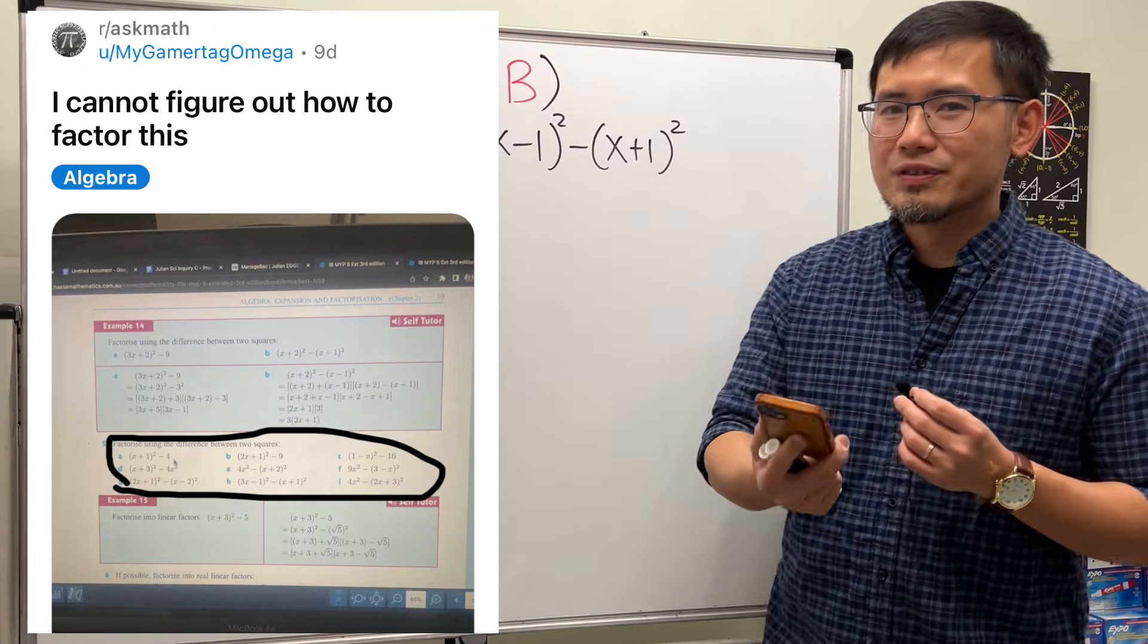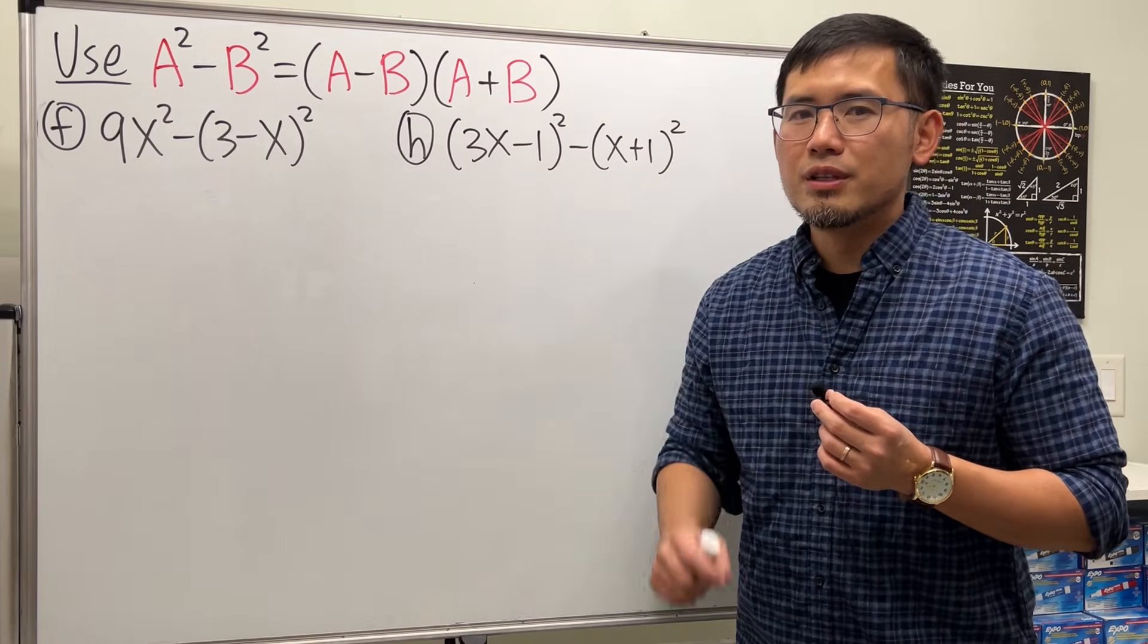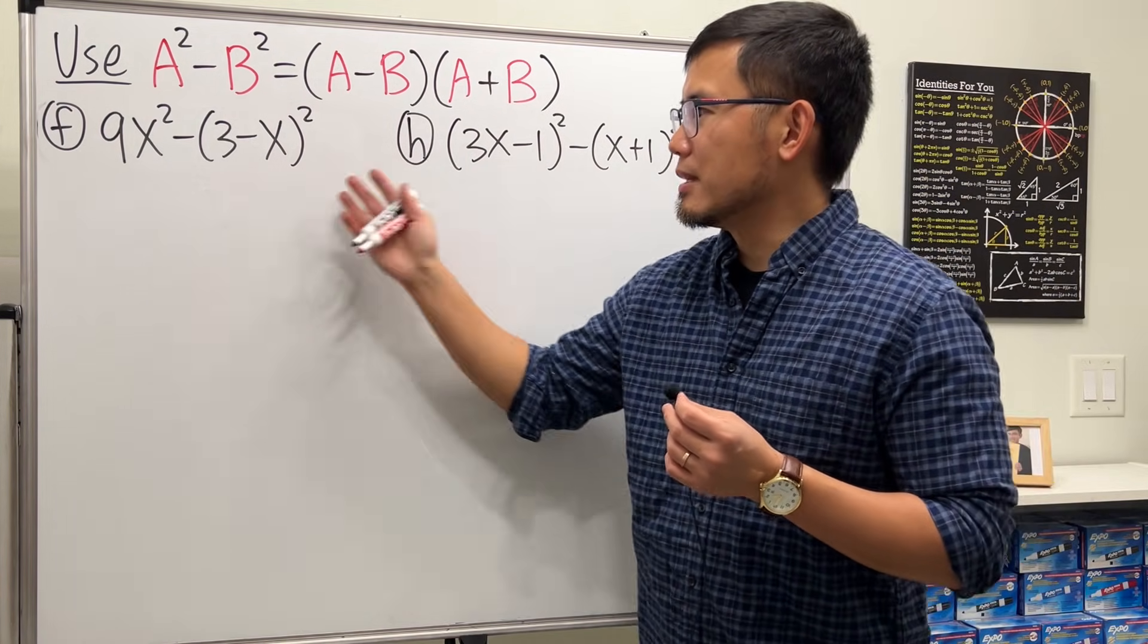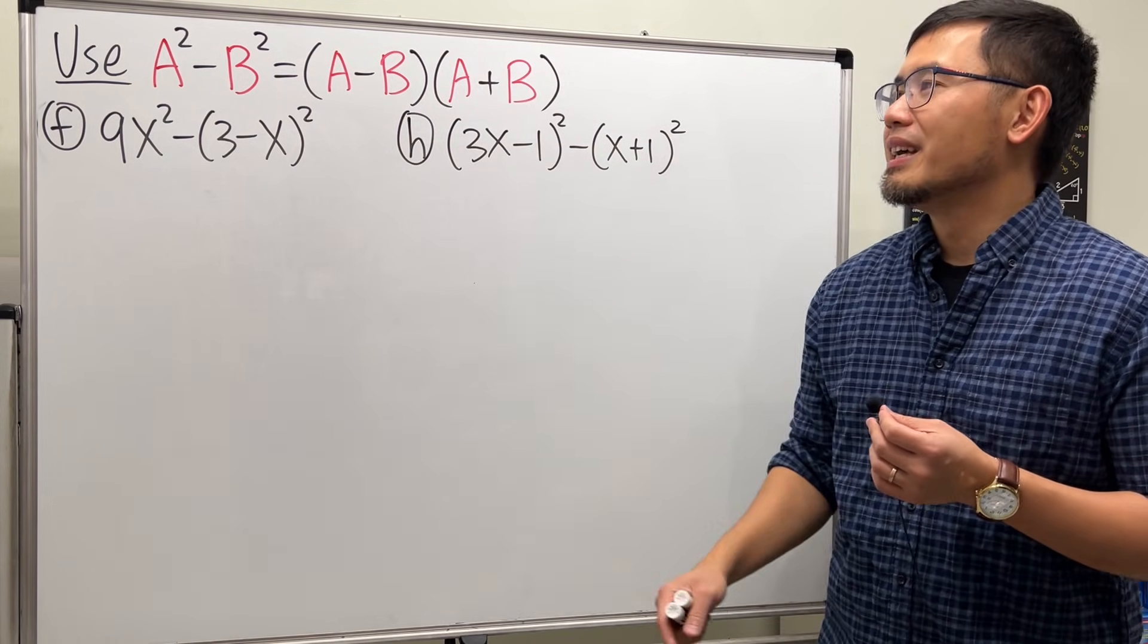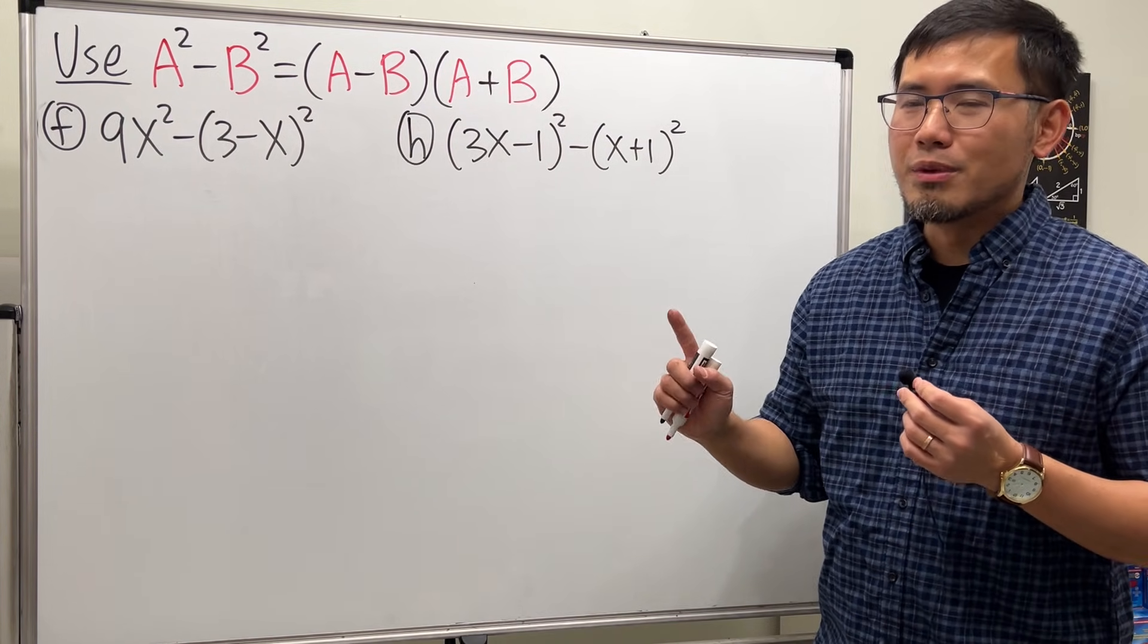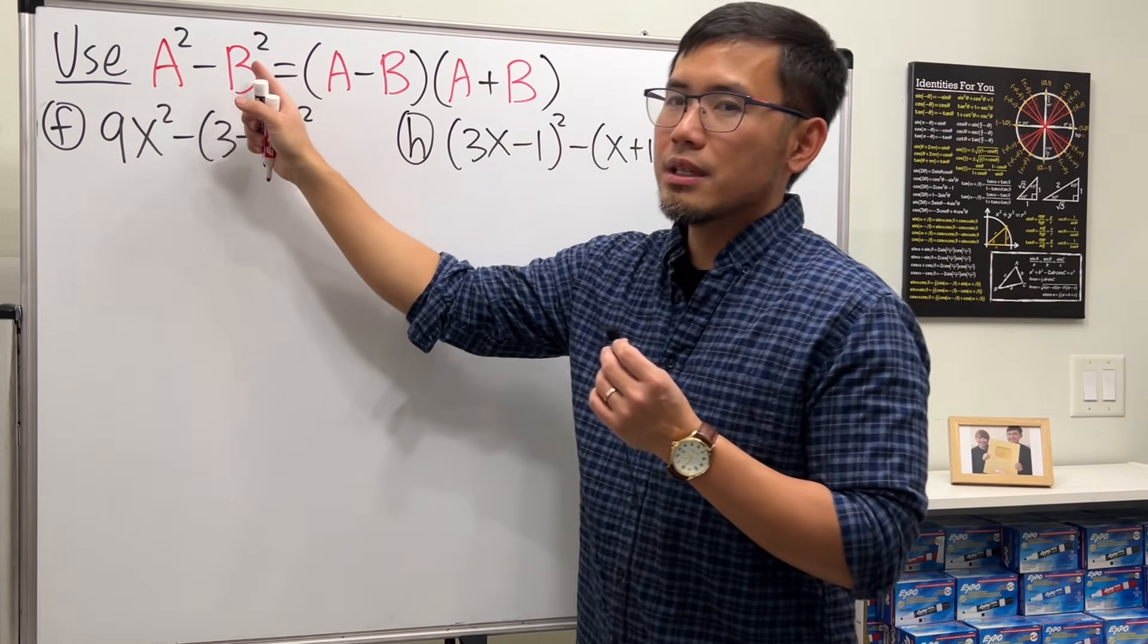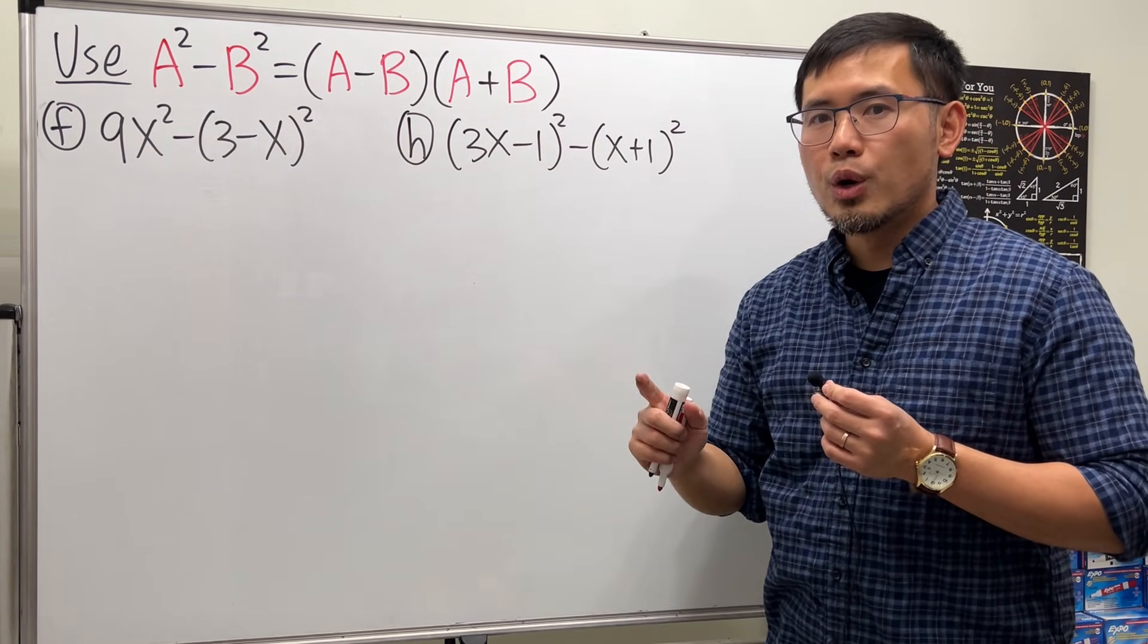Okay, my gametech omega, this right here is for you and anybody who is also learning how to factor a difference of two squares. I will show you these two as examples, and then make sure you do the rest so you can see how this really works. So first, we have to remember when we factor a difference of two squares, this right here can be factored as A minus B times A plus B. And our goal is to just first identify what the A and B are, and then just apply the formula.